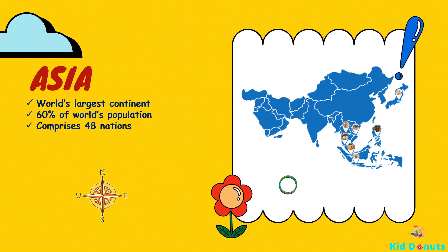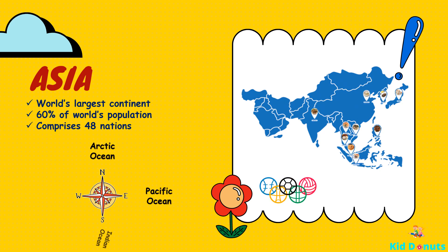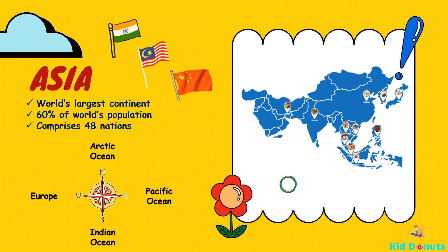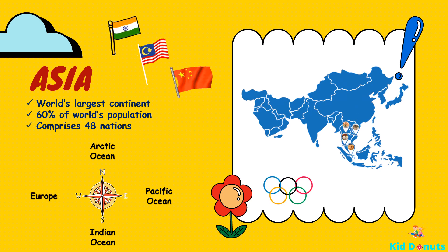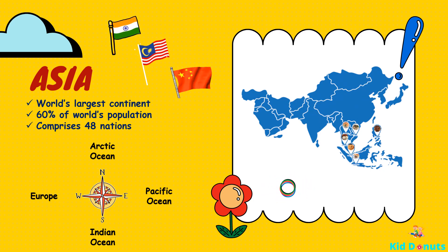The continent borders the Pacific Ocean in the east, the Arctic Ocean in the north, the Indian Ocean in the south, and Europe to the west. Some of the most populated countries in the world are here, including China, India, and Indonesia. More than a third of the world's people live in China and India alone.